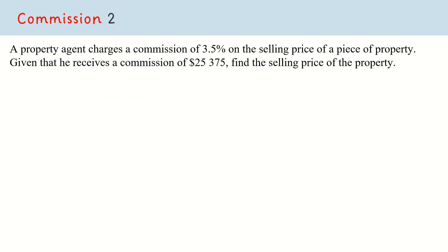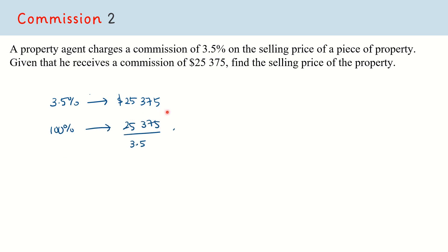Then, in another example, a property agent charges a commission of 3.5% on the selling price of a property. Given that he receives a commission of $25,375, we want to calculate the selling price. This $25,375 is 3.5% of the selling price. So 3.5% represents $25,375, and 100% — the selling price — would be $25,375 divided by 3.5, then multiplied by 100, giving us $725,000.